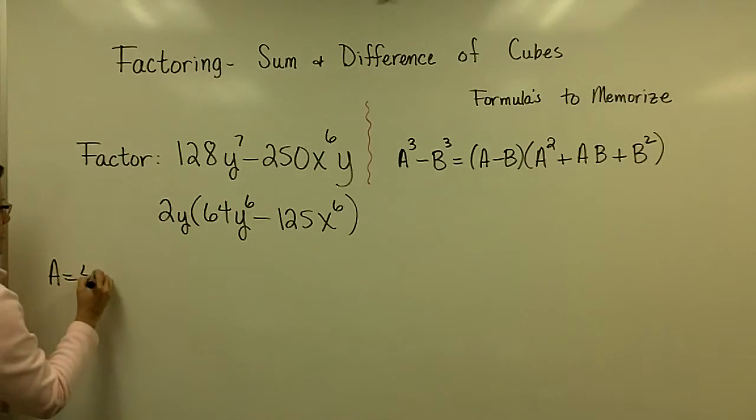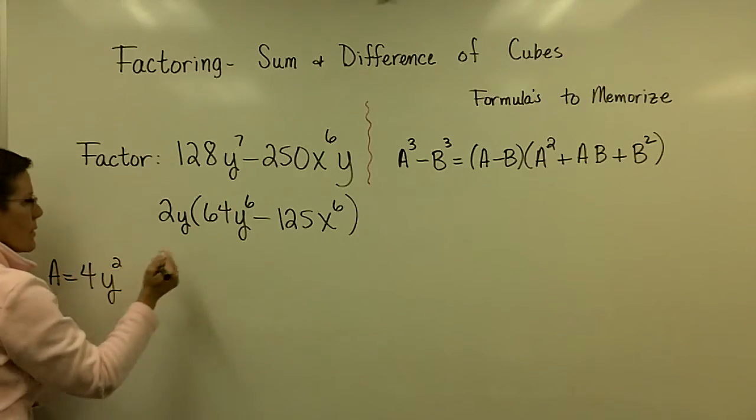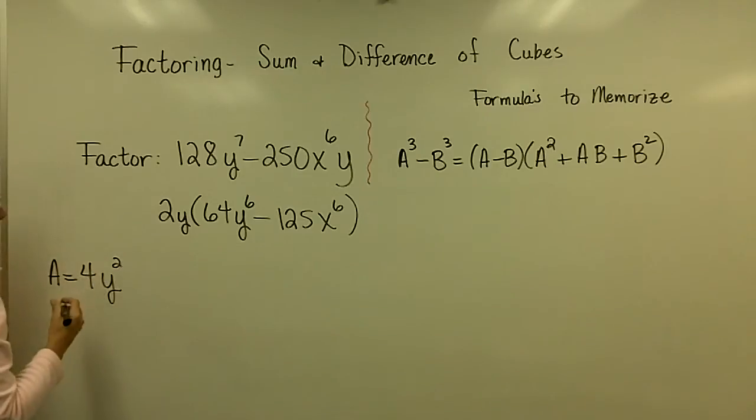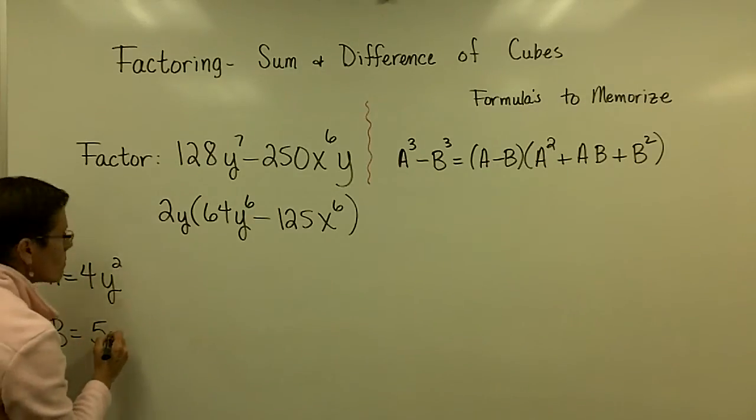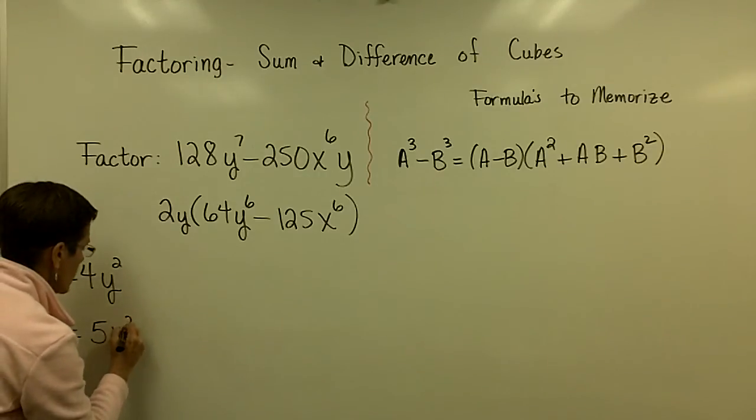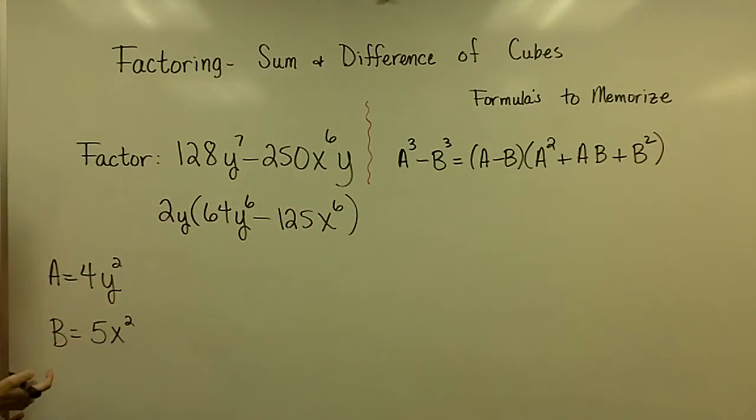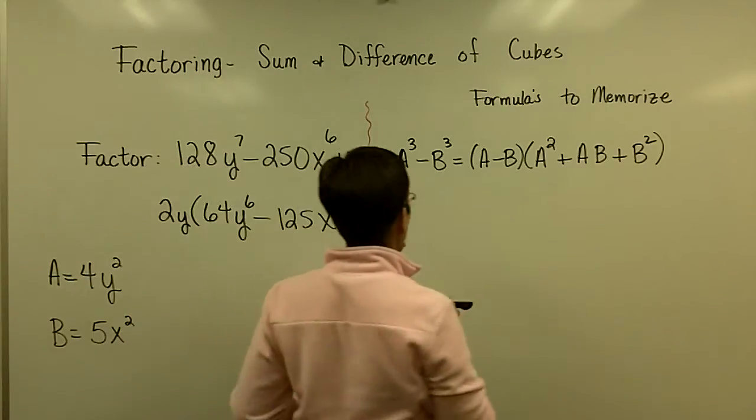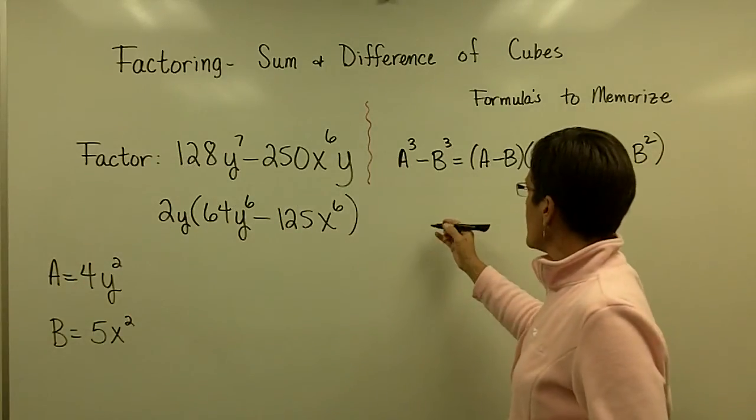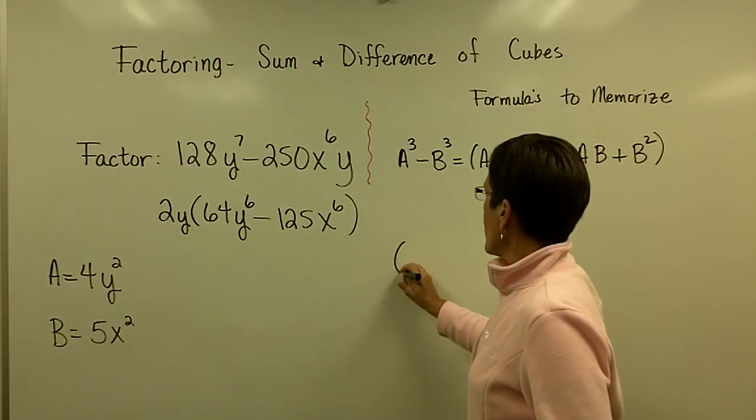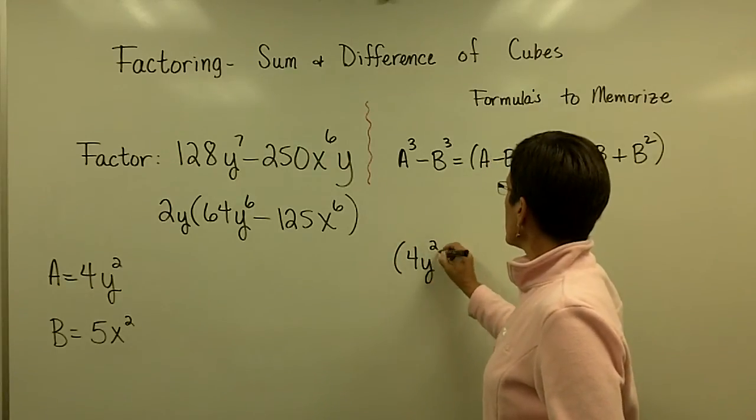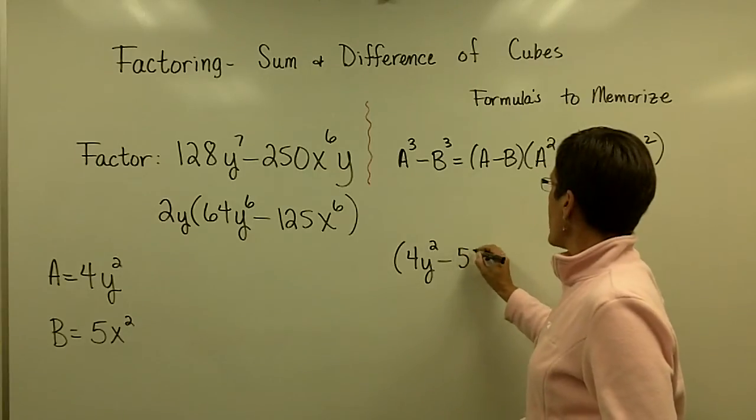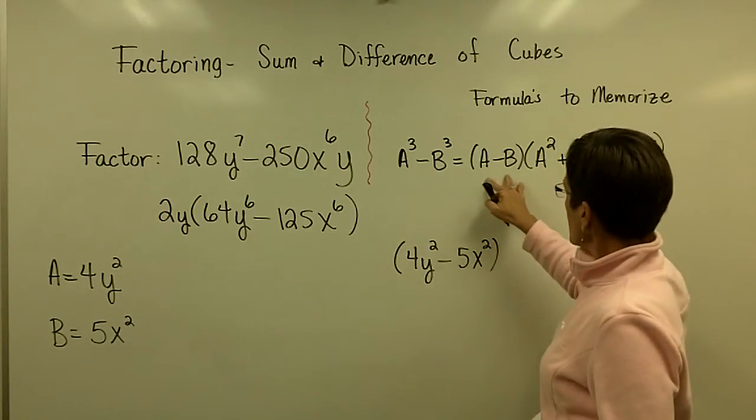So let's establish that in this binomial, my A value is 4Y squared. Six divided by three is two. My B value is 5X squared. Six divided by three is that two. Those are the values I'm going to put in over there for A and B. I've got to be sure to give myself a lot of room. I'm going to lean a little bit this way. So I'm minus my B value, which is 5X squared. There's my binomial.